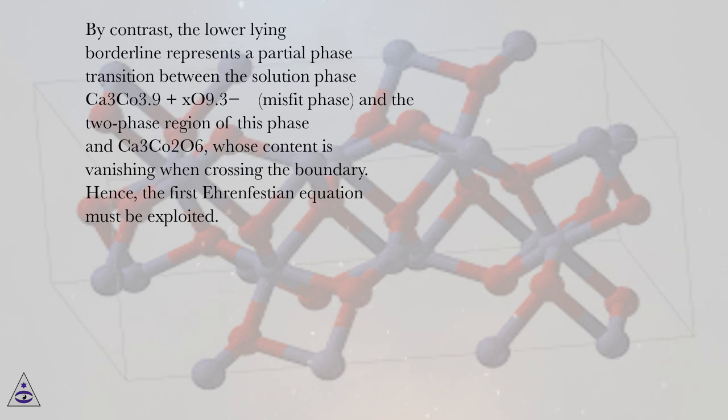By contrast, the lower borderline represents a partial phase transition between the solution phase Ca₃Co₃.₉₊ₓO₉.₃₋ (misfit phase) and the two-phase region of this phase with Ca₃Co₂O₆, whose content is vanishing when crossing the boundary. Hence, the first Ehrenfest equation must be exploited.